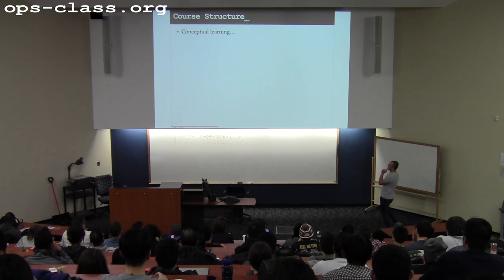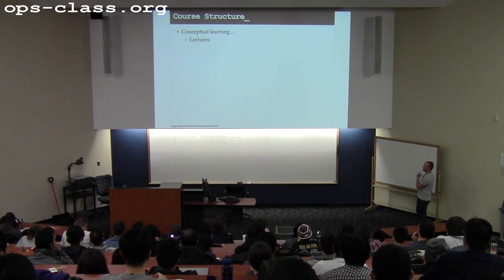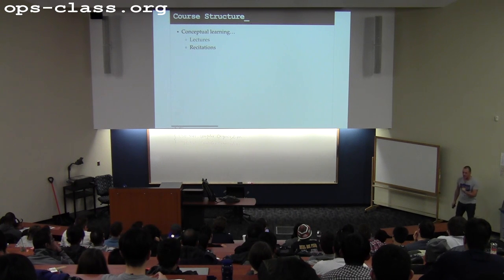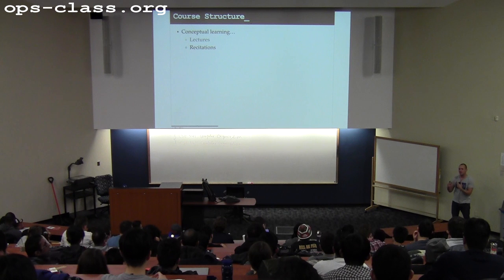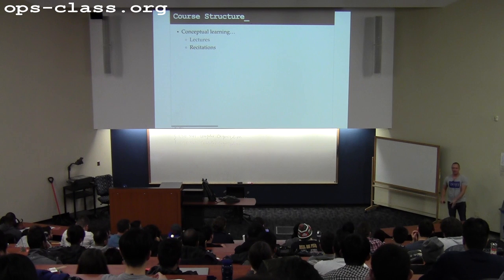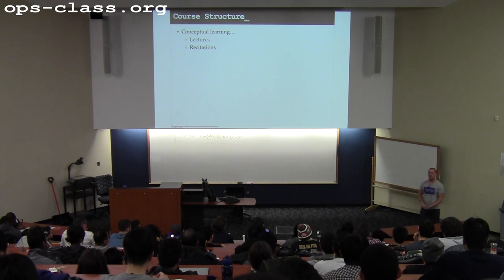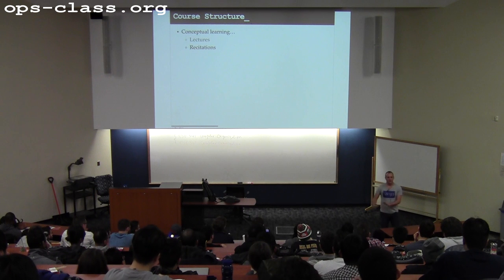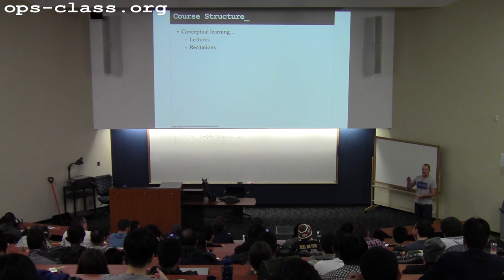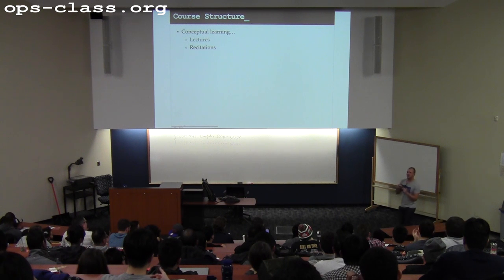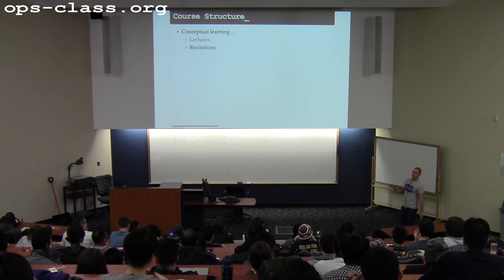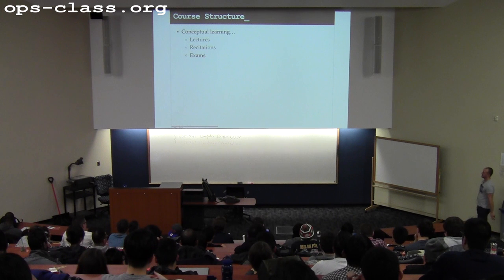How the course works: we talk about concepts in class and in recitation. Recitation is the meeting point where the conceptual material I talk about in class — I don't do code in class, I don't show you how to do the assignments — meets the practical reality of what we're asking you to do. In class we talk about how things are built and why they're built that way, and you get a chance to build these things yourself.